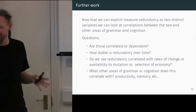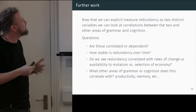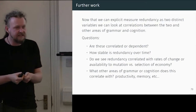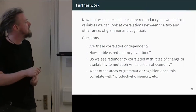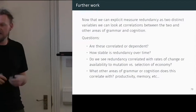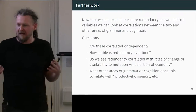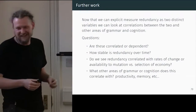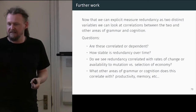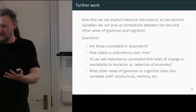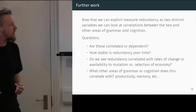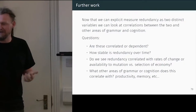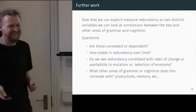Now that we have these as independent variables that we can operationalise, we can look at correlations between grammar and cognition. Do we see stability over time? Do we see a reduction of redundancy? Do we see redundancy correlated with rates of change or availability to mutations? Every linguistic theory says something about economy of expression, monotonicity, or markedness. In genetics, redundancy means if something's not performing a function, it's free to change — which is not how linguists think of it. But now we can actually measure these things, and maybe redundancy helps with memory, cognition, or other things. These are the things I'm going to do next.